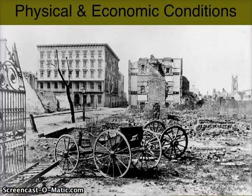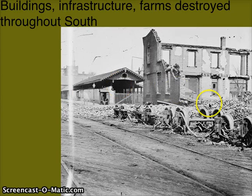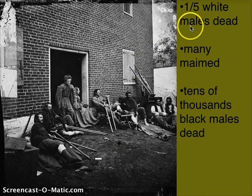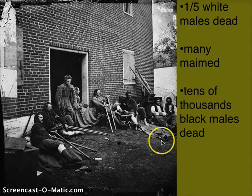Here's an example of some of the physical conditions in the South — there is a lot of destruction. Buildings and infrastructure are damaged, and farms are completely destroyed. On top of that, one-fifth of white males are dead due to the Civil War, and many are now maimed — injured. We also have tens of thousands of black males who are also dead.